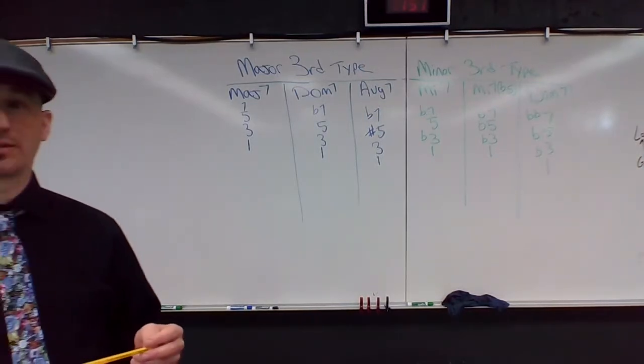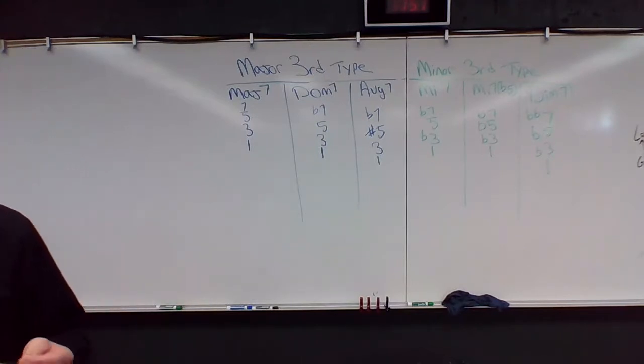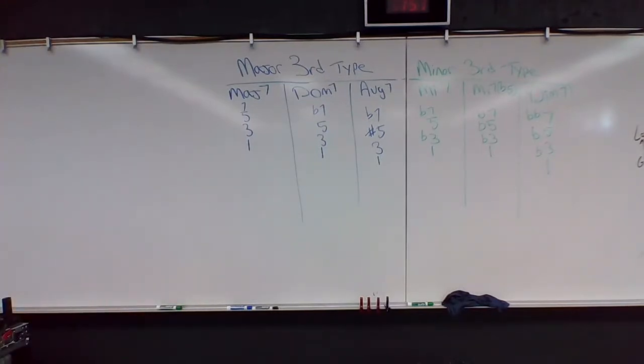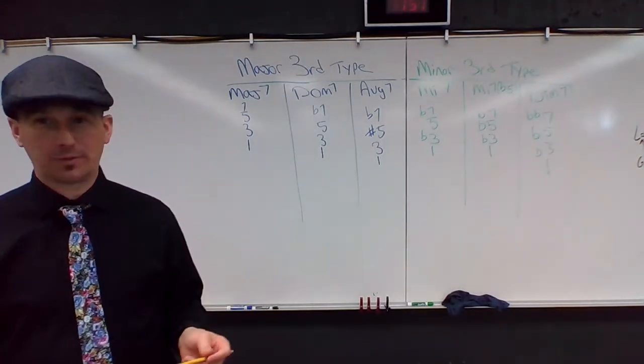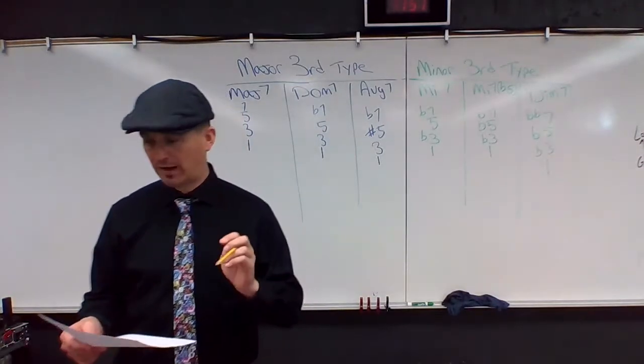You've got to understand what a spelling versus a voicing is. You've got to know your four triadic harmonies and the degrees that make them up. So major, one three five. Minor, one flat three five. Diminished, one flat three flat five.